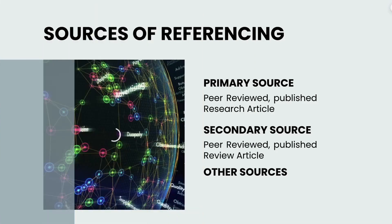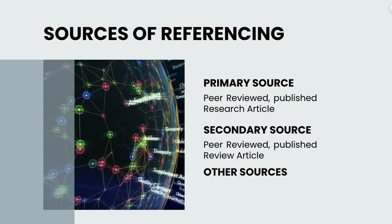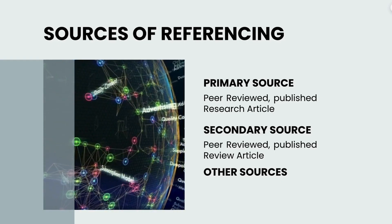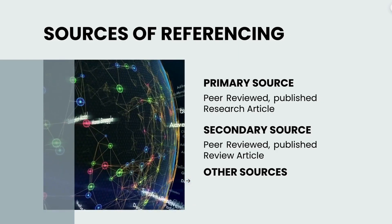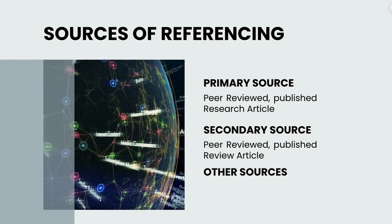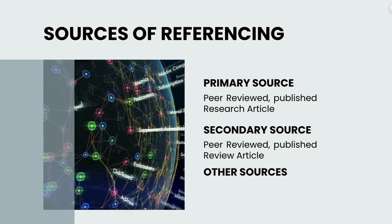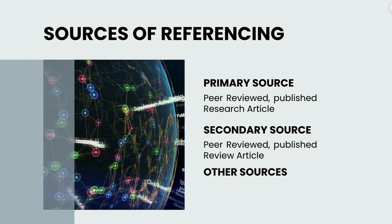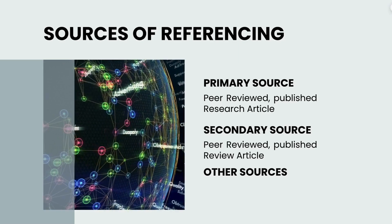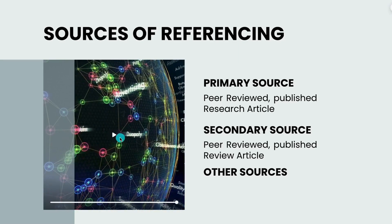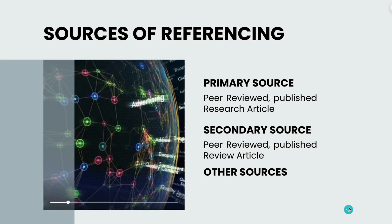Now, what are the main sources that can be used as a source or as referencing? Primary sources and secondary sources can be used. We can say review articles and research articles. Also we have other sources such as books, conference papers, and conference abstract papers. However, as editors and peer reviewers we do not recommend using books or conference abstract papers because these are not peer-reviewed works.